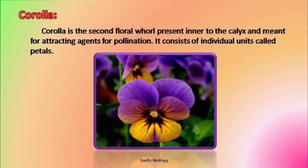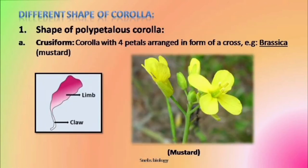The main function of corolla, because it is brightly colored, is to attract agencies for pollination. This is the primary function of corolla, and these agencies could be birds, insects, or animals. They are brightly colored so that these agencies get attracted towards the flower. When we talk of corolla, there are various forms of corolla — now we will discuss those forms.